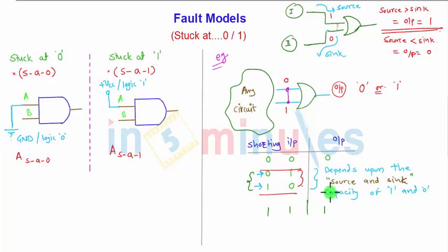Particularly, this depends upon the source and sink capacity of the one and zeros. This you can also go through the session of TTL to CMOS interface or CMOS to TTL interface in which we have to adjust the high state and the low states of both of the logic families to drive each other. The same thing is there in which to avoid this, we're going to use the pull up resistors or the pull down resistors to handle this kind of faults.